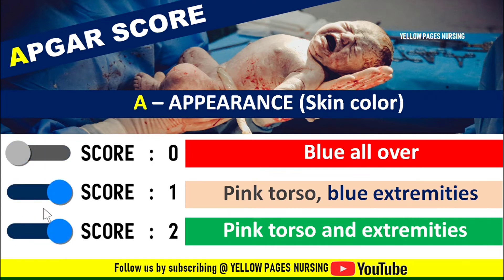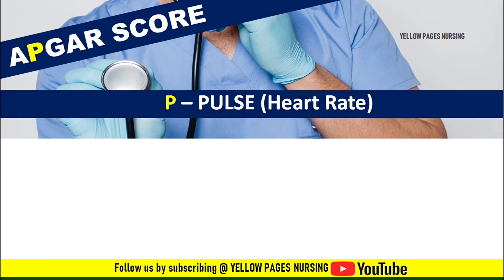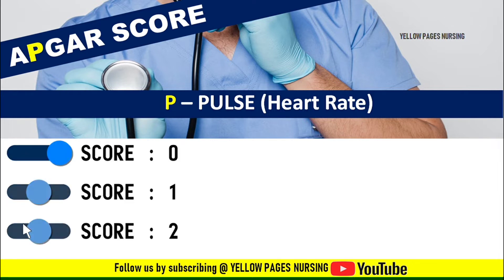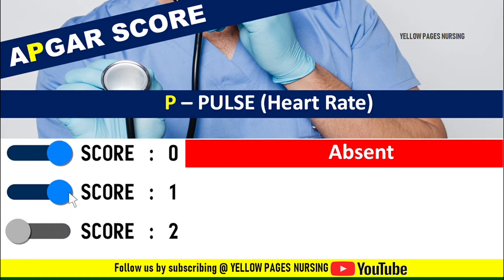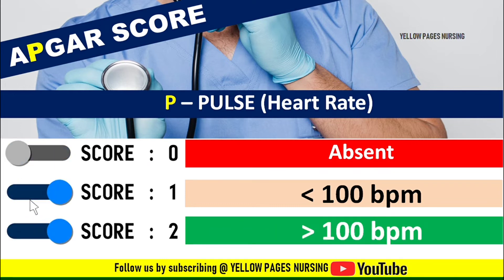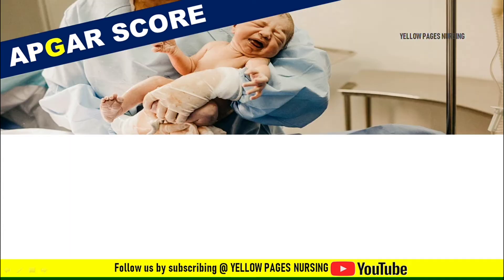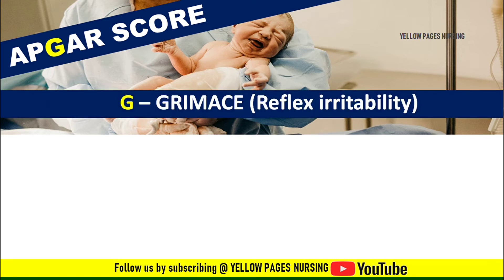Next comes Pulse, or heart rate, which is evaluated by a stethoscope — this is the most important assessment. Score 0 indicates absence, meaning there is no heart rate. Score 1 indicates a heart rate less than 100 beats per minute. Score 2 indicates a heart rate greater than 100 beats per minute.